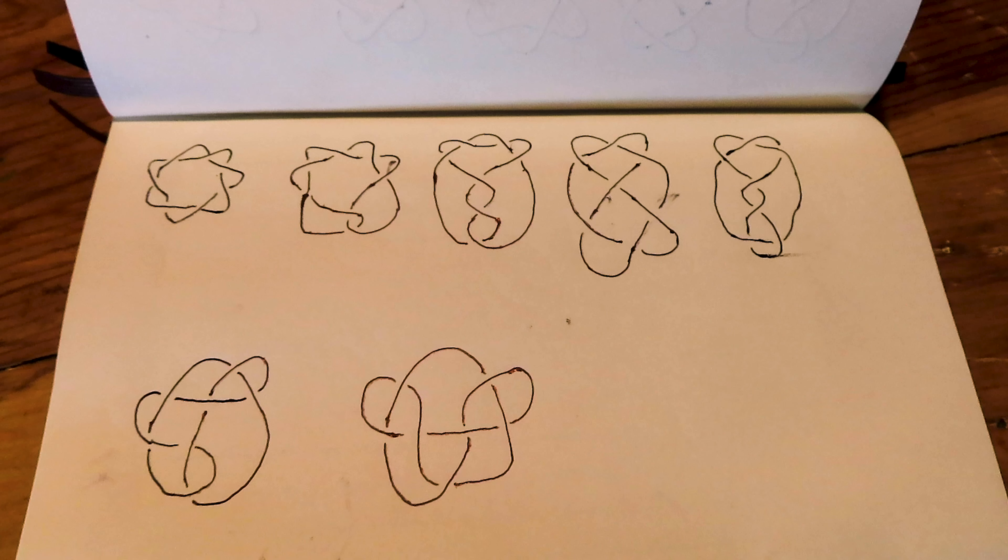Howdy! Today we are aiming to tie the fifth of 7 knots with 7 crossings, the 7-5 knot.